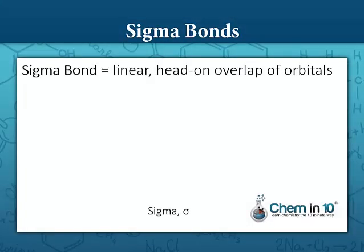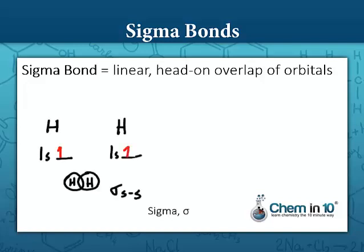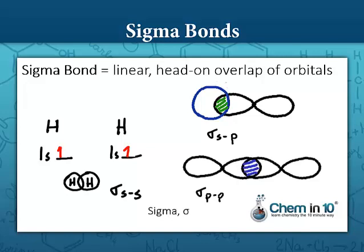Sigma bonds are linear head-on overlap of orbitals. Here in this example in hydrogen gas we have two hydrogen s orbitals overlapping with each other. That would be a sigma s-s bond and here we have a sigma bond between an s orbital and a p orbital and we also can have sigma bonds between two p orbitals as long as they overlap head to head.